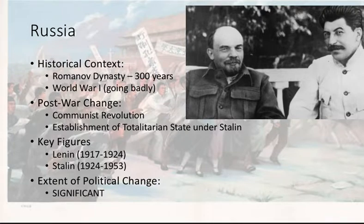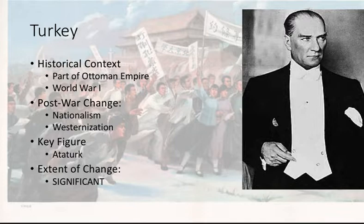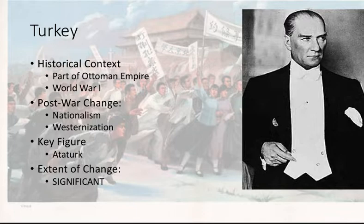Let's take a field trip south and head to Turkey. The historical context of Turkey is, of course, that they were a part of the Ottoman Empire. The Ottoman Empire fights in World War I, loses, and as a result falls apart. It was an empire at the beginning of the war, and by about 1920 the empire is crumbling rather quickly. When Turkey emerges as a nation state, it's led by a guy named Ataturk, or Mustafa Kemal, who brings westernization and secular Islam to Turkey — he wants to make them more like the West. The extent of political change: they went from being part of the Ottoman Empire with strict Islamic rules to a westernized state. That would be significant.